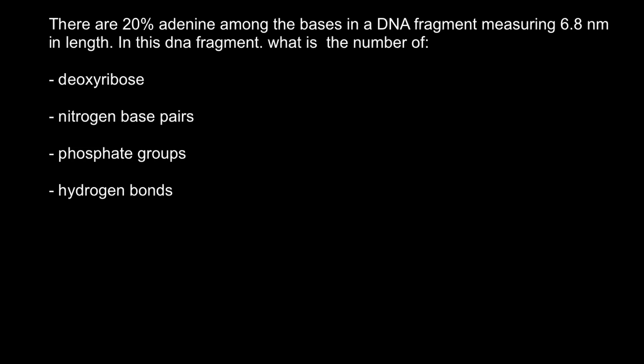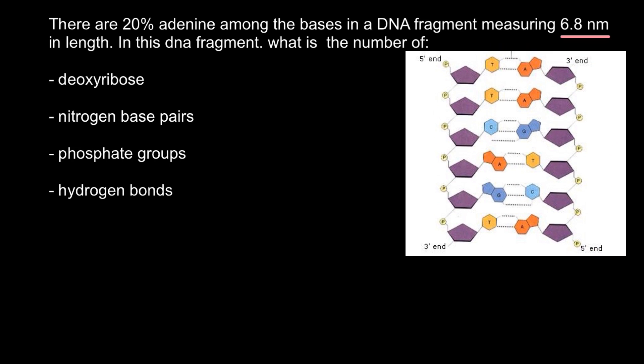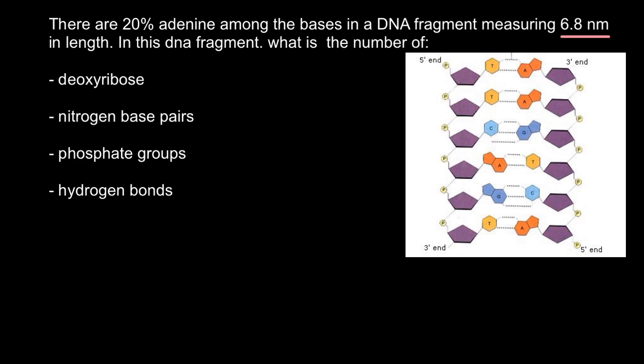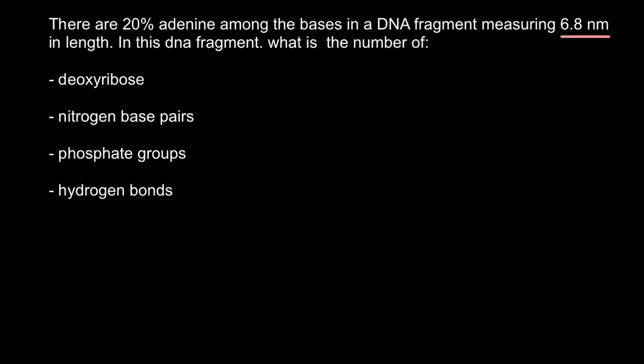First of all, we have to find how many bases in 6.8 nanometers. The distance between two adjacent bases on the same strand of the DNA, like between this base and this base, is 0.34 nanometers. So between 10 bases on the same strand of the DNA would be 3.4 nanometers, and between 20 would be 6.8 nanometers. So now we know that we have a fragment of the DNA with 20 adjacent bases on one strand, and of course that means that in double-stranded DNA we would have 40 bases.